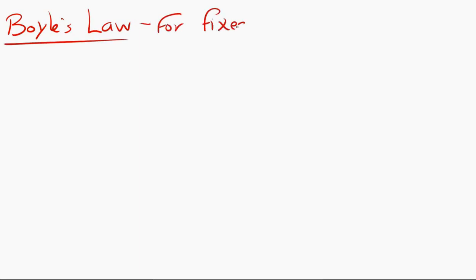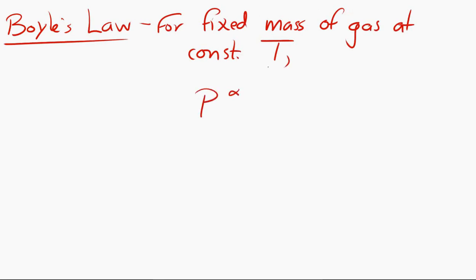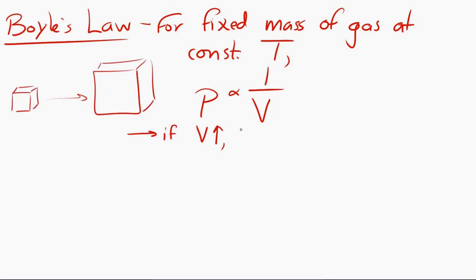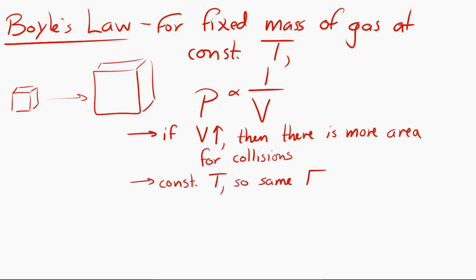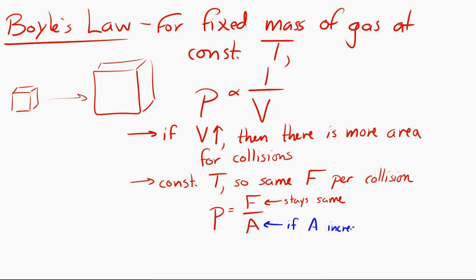Boyle's law states that for a fixed mass of gas kept at constant temperature, the pressure is inversely proportional to the volume. If we increase the volume but keep the temperature the same, we have a greater area over which the molecules are having an impact. Every collision still applies roughly the same force because the molecules aren't any faster or slower. But the force is spread over a larger area, so if we increase the volume, the pressure decreases. Pressure is inversely proportional to volume at fixed mass and constant temperature.